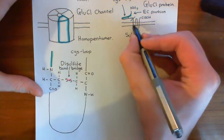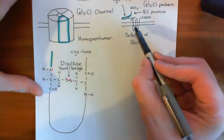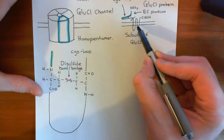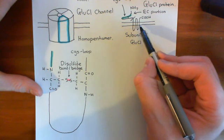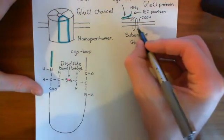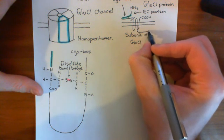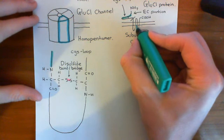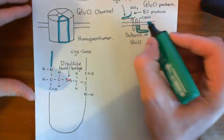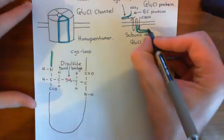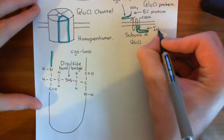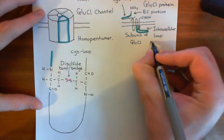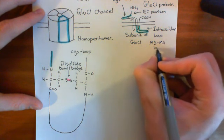The membrane-spanning alpha helices also have names. The first membrane-spanning alpha helix is called the M1 alpha helix, the second is M2, the third is M3, and the final one is M4. The link between the M3 and M4 alpha helix is actually massive — much bigger than the link between M1 and M2. This loop on the cytoplasmic side is known as the intracellular loop, or the M3-M4 loop.